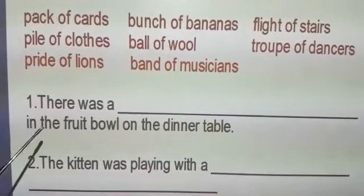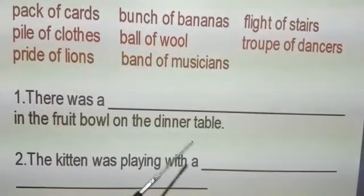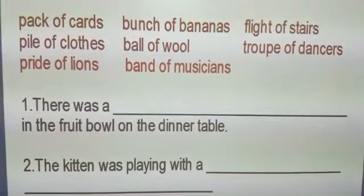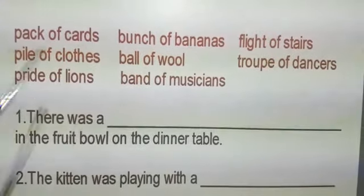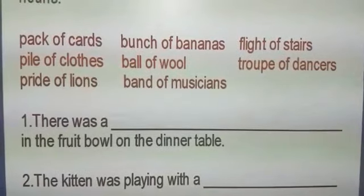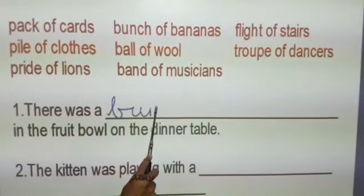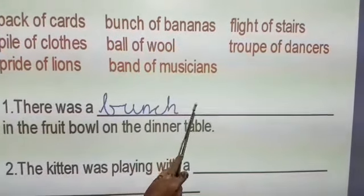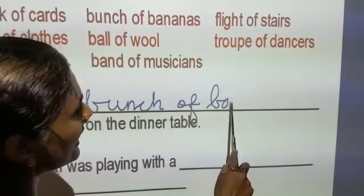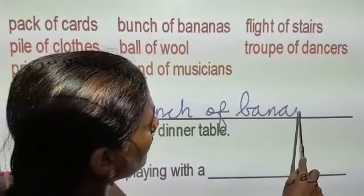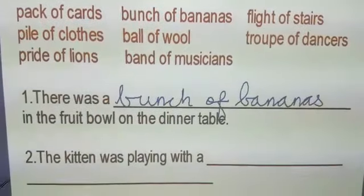Number one: There was a dash in the fruit bowl on the dinner table. Children, can you guess? Yes — fruit. The fruit in the bracket is banana, so we have to use 'bunch.' B-U-N-C-H. Bunch of bananas. All understood, children? Here, the collective noun we used is 'bunch.'